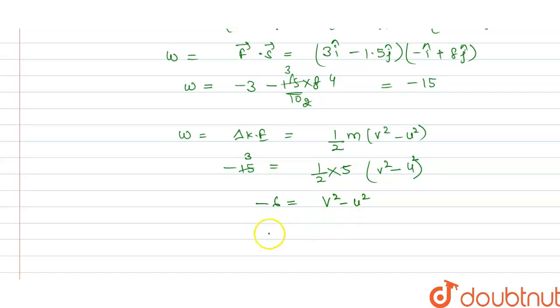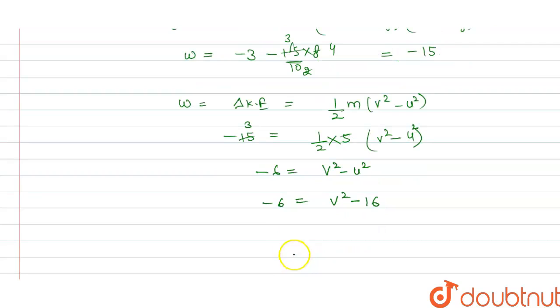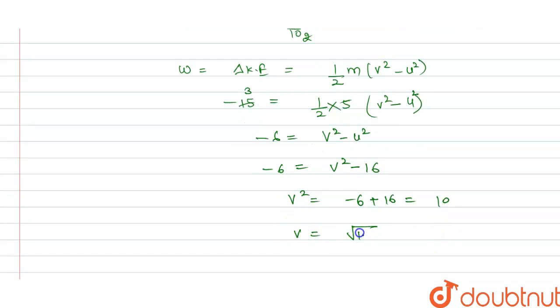U squared is 16, so we have v squared minus 16 on one side and on the right hand side it will become minus 6 plus 16, that is 10. So from this we get final velocity is square root 10 meter per second.